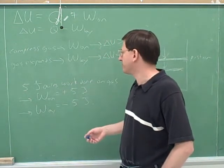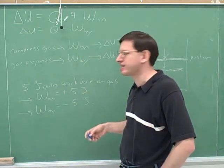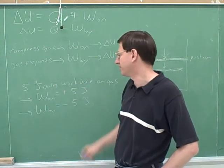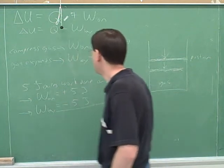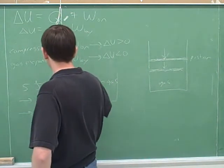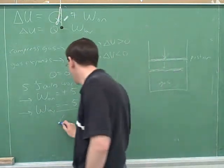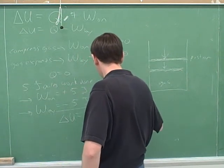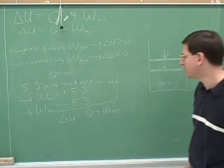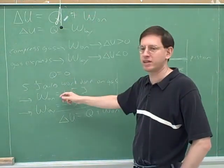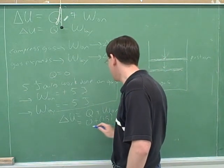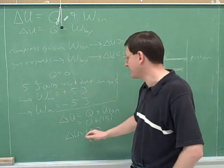Which approach is better for our physics — the common sense approach or the mathematician's approach? Physicists follow the mathematician's approach. The physicist would say work is being done by the gas — it's just negative work — so they can plug into the equation. Let's say Q is 0 and figure out delta U. Using the equation with work done on the gas, plug in 0 for Q and positive 5 joules for W_on, and we get delta U equals positive 5 joules. That's what we would expect — we're adding 5 joules of energy.